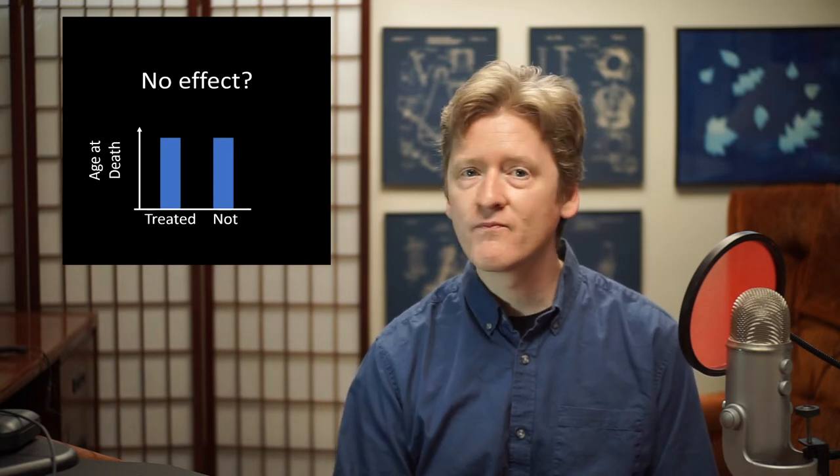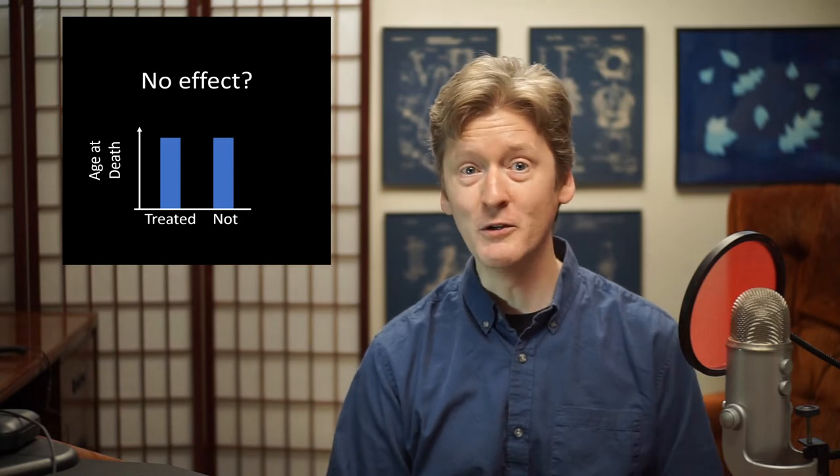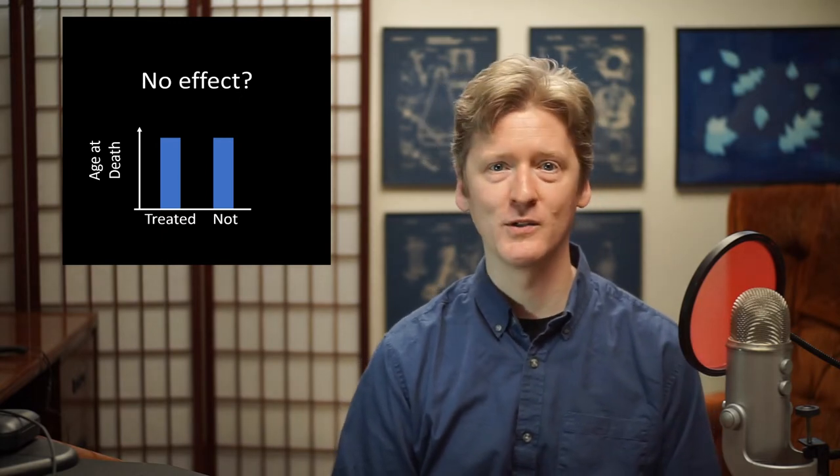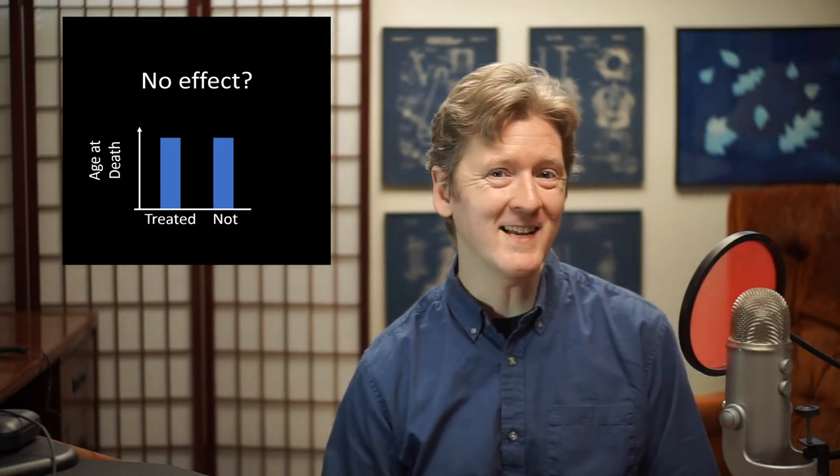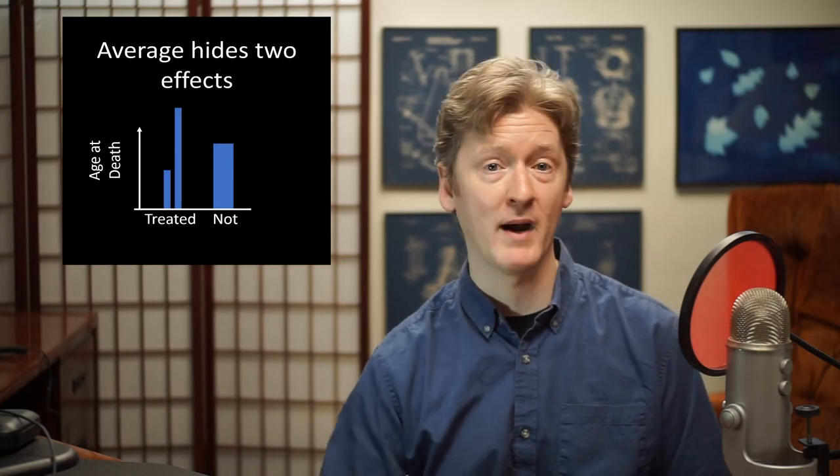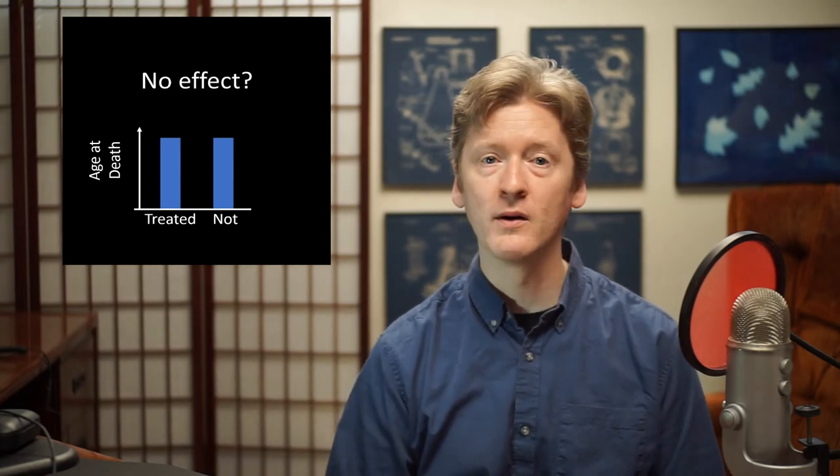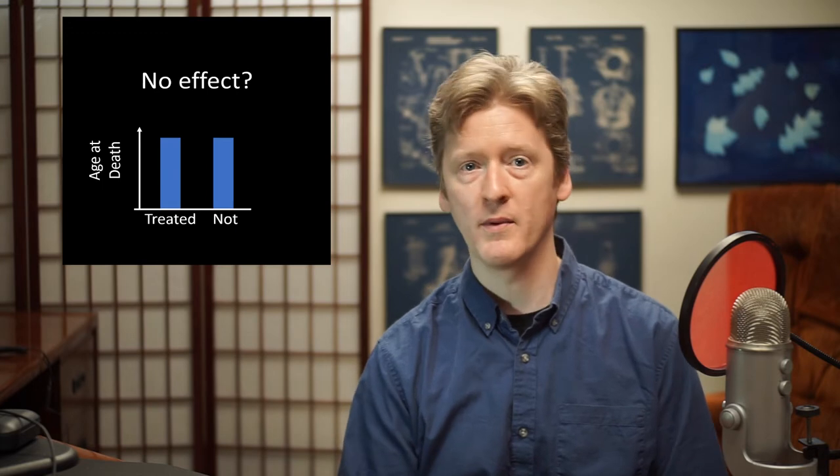And two, it may hide some averaging effects. So, for instance, if this treatment reduced the lifespan of half the animals by a lot, but extended the lifespan of a lot of the other animals by a lot, the average number would hide that effect. You'd just say, well, maybe there wasn't any effect at all, when in fact there was a big effect. It was just in two different directions for different individual fish.